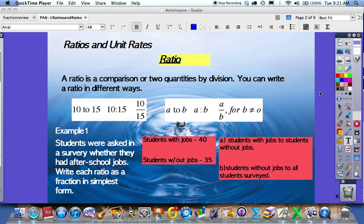Today we're going to talk about ratios and unit rates. What is a ratio? A ratio is a comparison of two quantities by division. You can write a ratio in different ways.